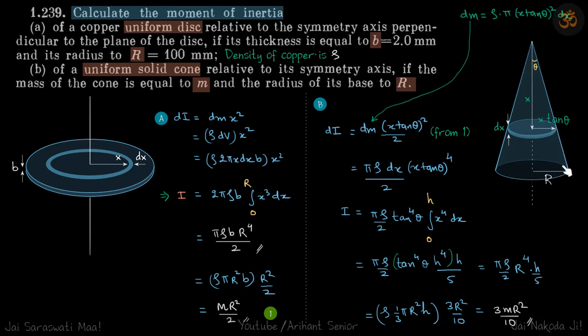We don't want h; mass is given to us. Recall that the volume of the cone is (1/3)πR²h, and volume times ρ equals the mass of the cone. This gives the moment of inertia of the cone to be 3mR²/10.